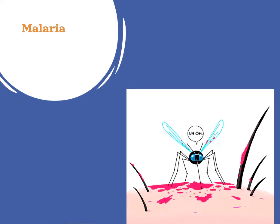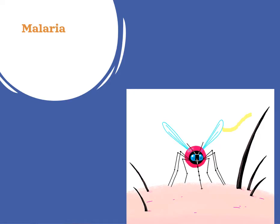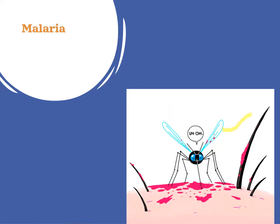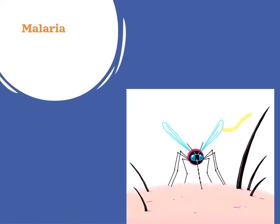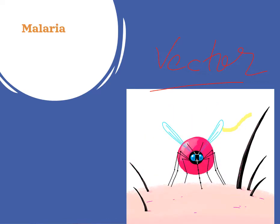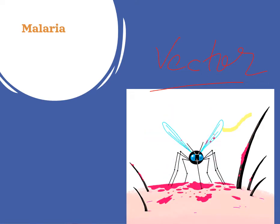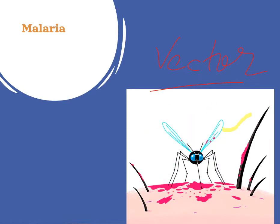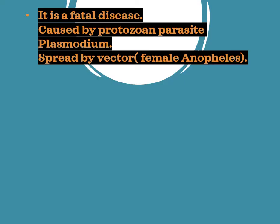Malaria is a mosquito-borne disease. It is caused by a protozoan parasite called plasmodium. The mosquito plays the role of a vector here. A vector is a vehicle that transports something — in malaria, the mosquito transports the plasmodium parasitic protozoan. It is a very fatal disease caused by the protozoan parasite plasmodium.